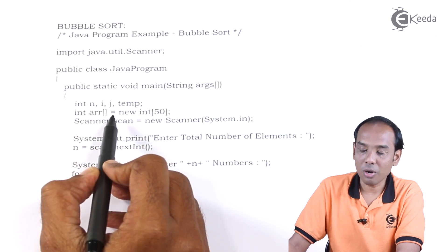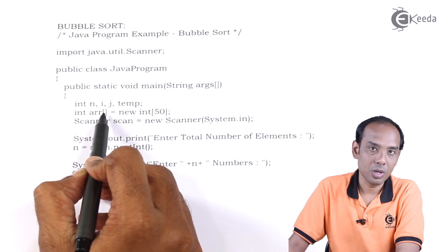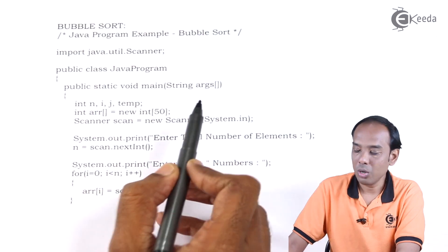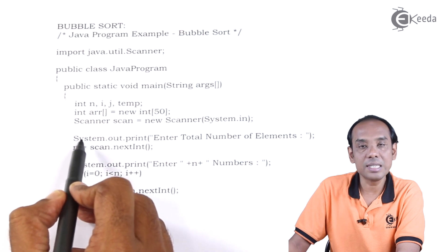We will take the values of the array from the user. We have defined an array arr which is of size 50. Then we have taken the elements from the user using a scanner class object. These elements are stored in the variable called n.